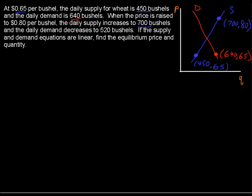And the same price of 80 cents is going to give a demand of 520 bushels. 520 bushels comma 80 cents. Okay, that gives us two points for each line, which then will let us build an equation for each.